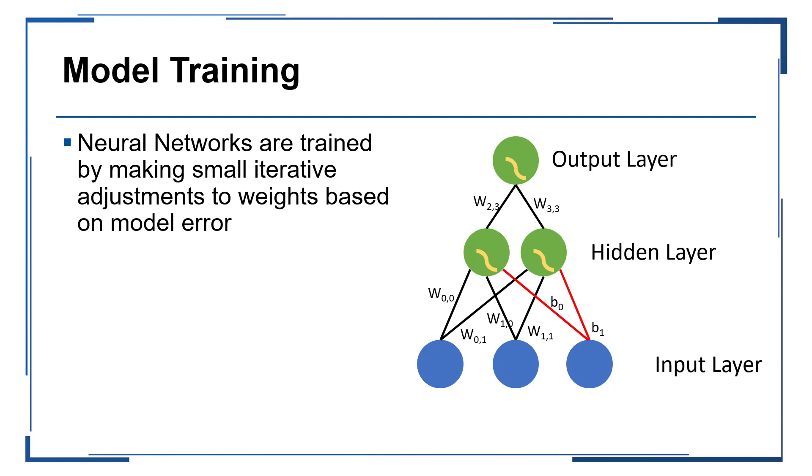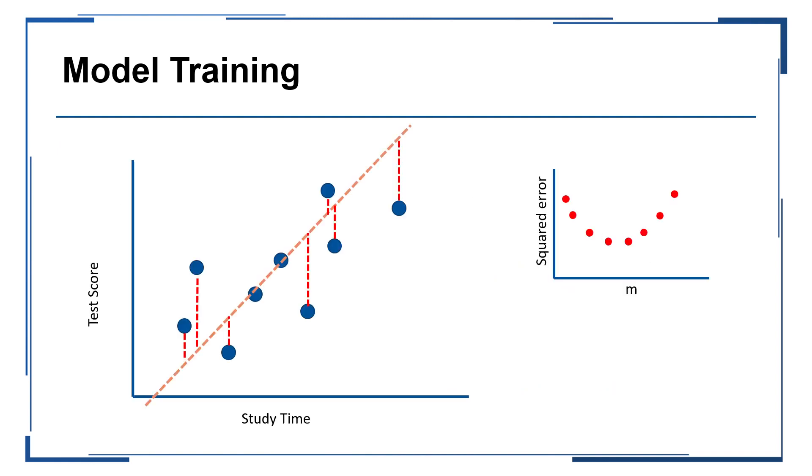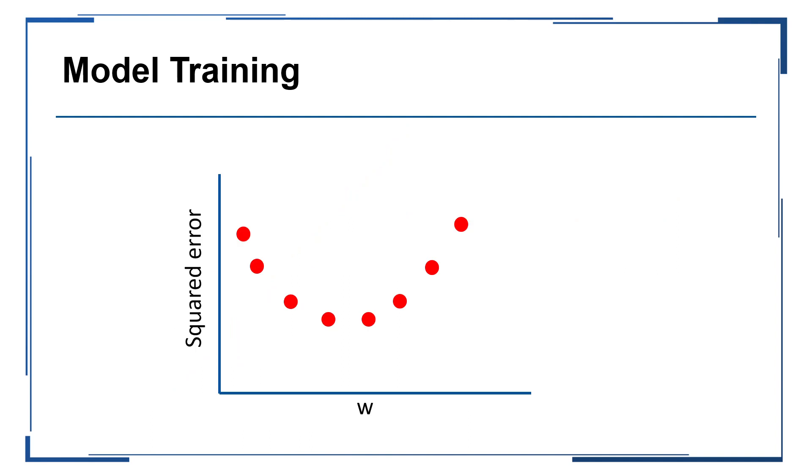Regardless of the model structure, the complexity of neural networks requires them to be trained over multiple iterations while making small adjustments to the model weights throughout the network. So to understand this concept further, let's consider our linear regression example again. When we fit a linear regression model, we end up with a cost function with a single global minima. This was the case regardless of the number of features in the model, whether we had one feature or a hundred.